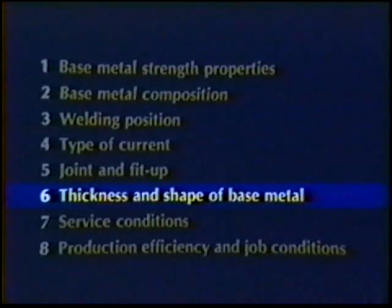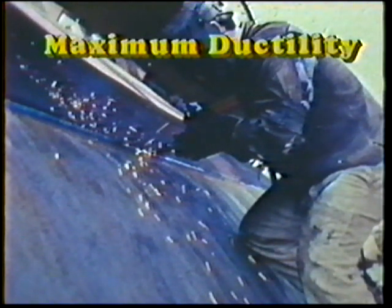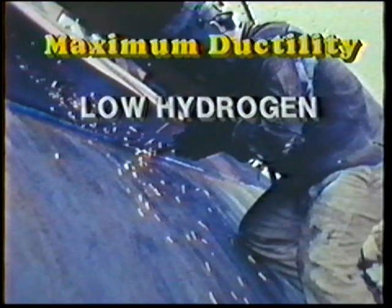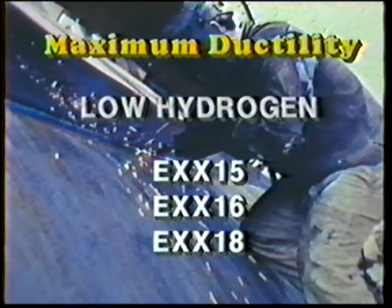Point six: thickness and shape of base metal. Weldments may include thick sections of complex shapes. The electrode selected should have maximum ductility to avoid weld cracking. Select the low hydrogen types: EXX15, 16, or 18.